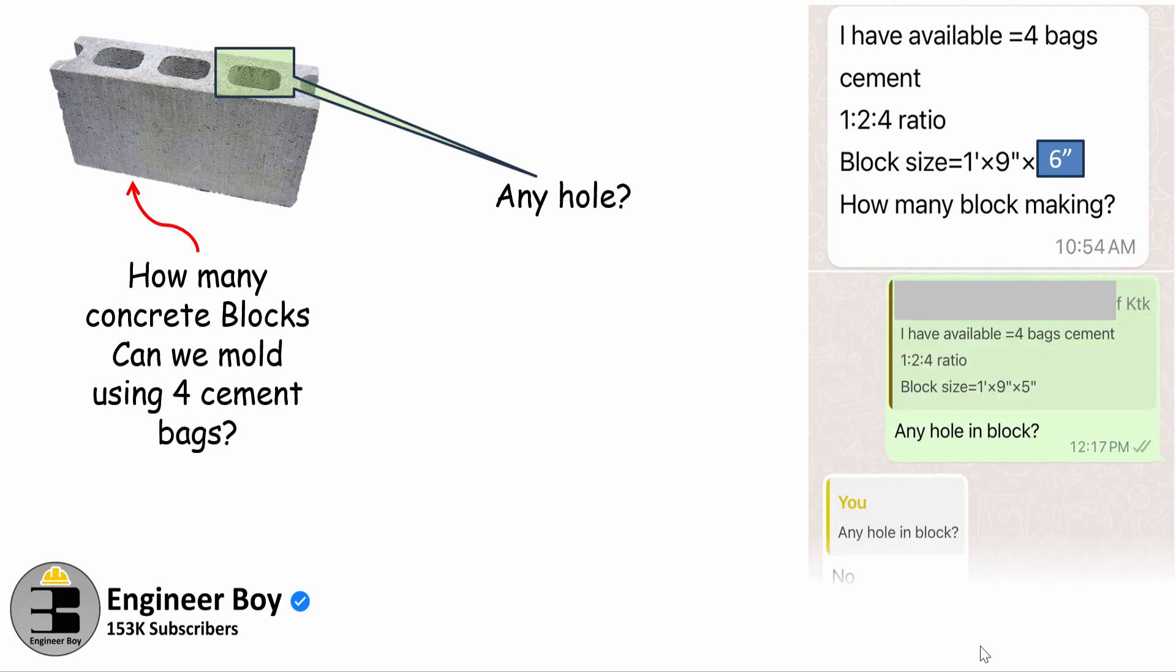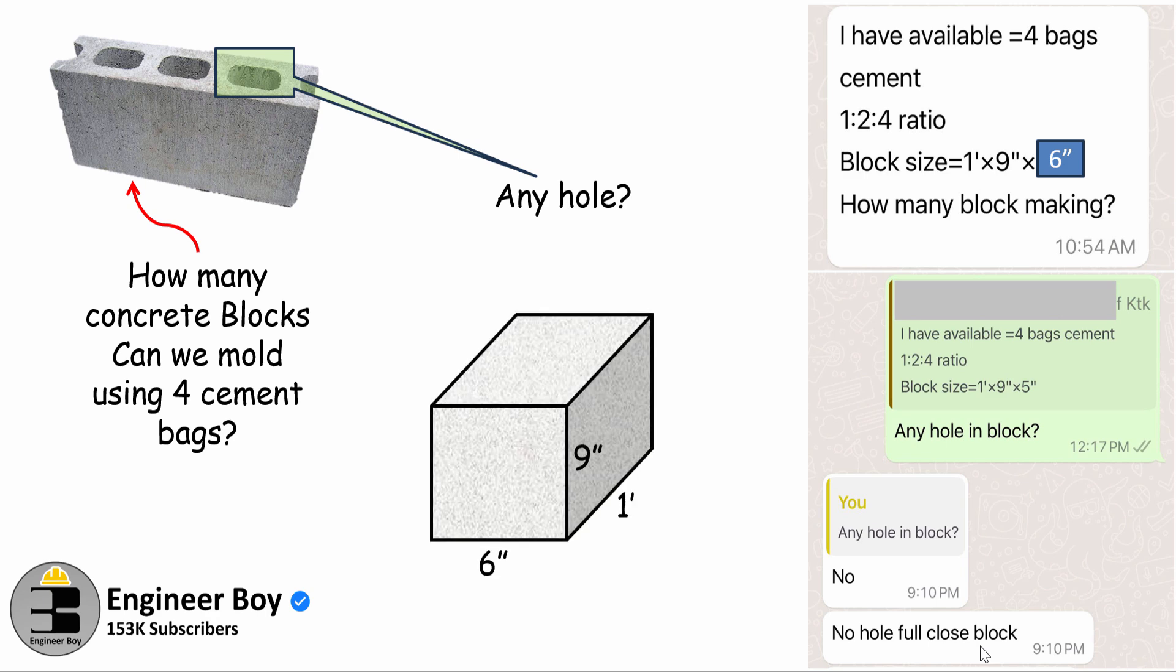That's why I asked about the holes. If there is any hole in the block, but he said no, the block is completely solid. No hole, full closed block. It means the block is solid and the size is known: 6 by 9 inches and the length is 12 inches.